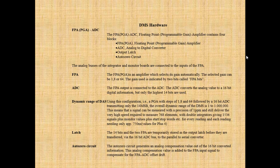The FPA/PGA is an amplifier that selects its gain automatically. The selected gain can be 1, 8, or 64, indicated by 2 bits called FPA bits. The FPA output is connected to the ADC, which converts the analog value to a 16-bit digital value, but only the highest 14 bits are used. Using a PGA with gain steps of 1, 8, and 64 followed by a 16-bit ADC transmitting only the 14 MSB, the overall dynamic range of the DMS is 1 to 1,000,000.